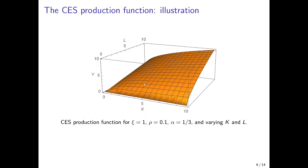Here is a general illustration of a CES production function for xi equal to 1 (constant returns to scale), rho equal to 0.1 — meaning the two production factors are gross substitutes, easier to substitute than in the Cobb-Douglas case — and alpha equal to one-third, so the share of capital is one-third and the share of labor is two-thirds. We vary K and L. Capital is on the x-axis, labor on the y-axis, and output on the z-axis. If we do not employ any production factors, we cannot produce at all; if we employ only one, the same holds — we must employ both. Along the diagonal, we have constant returns to scale.